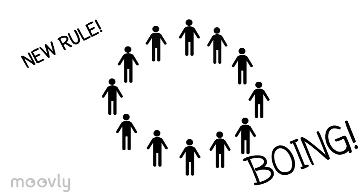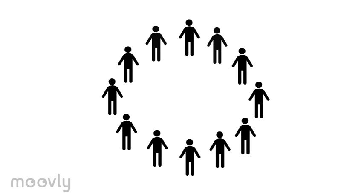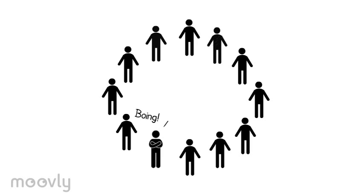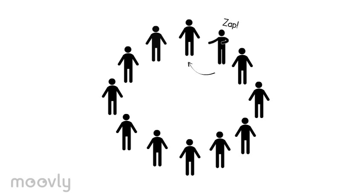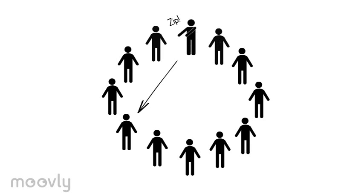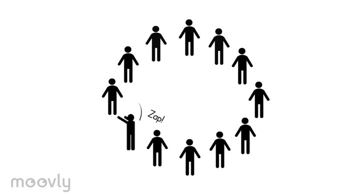When you get a zip or zap, you can now return it to the same person from whom you got it by saying boing and crossing your arms in front of your body. It's not possible to boing someone else's boing — this will count as a mistake. Let the team get used to the new rule.